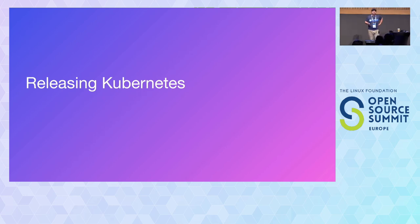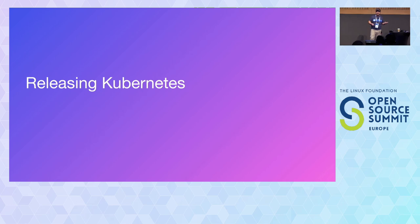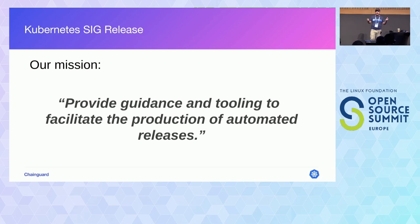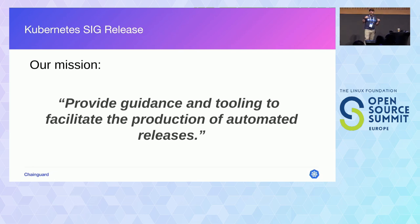I want to talk about the challenges of releasing Kubernetes. For anybody that's not aware, Kubernetes is the largest Go program in the open source world. It has a vibrant codebase and community around it, around 1,000 people actively pushing commits to the project. In SIG Release, we are the guardians of the releases of Kubernetes — we build all the guidance and tooling that makes the releases possible every month.